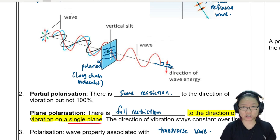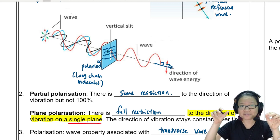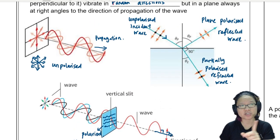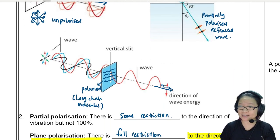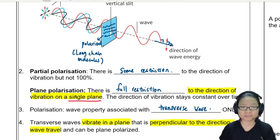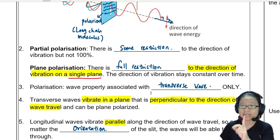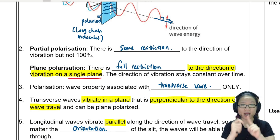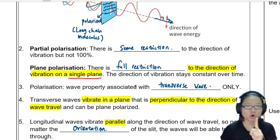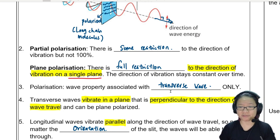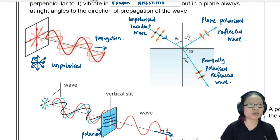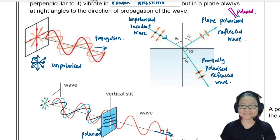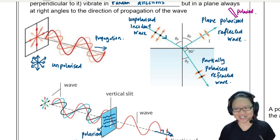So, polarization in a nutshell: when you have one sunglasses, it changes the electromagnetic wave from vibrating in many directions to one single direction - this is called plane polarization. Plane polarization only applies to transverse waves. Put a Polaroid in and the wave will travel in one plane - full restriction to a single plane. Sometimes during reflection we can tell the reflected wave is plane polarized. If we take a Polaroid like a sunglasses and rotate it, what happens? That'll be in the next video.